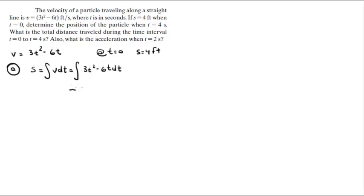When you integrate this, you get that this is equal to t cubed minus 3t squared plus c. But we're given an initial condition right here. We know that when s is 4, t is 0. So this is 0 cubed minus 3 times 0 squared plus c. You get that c is equal to 4.